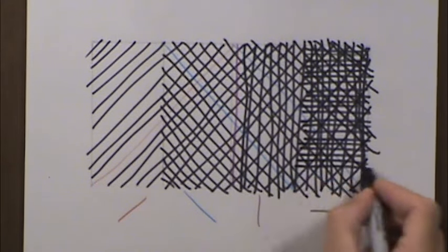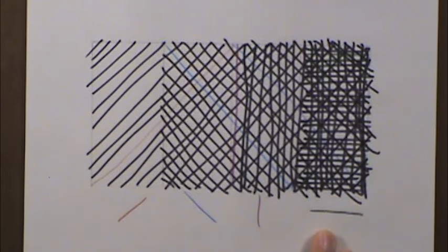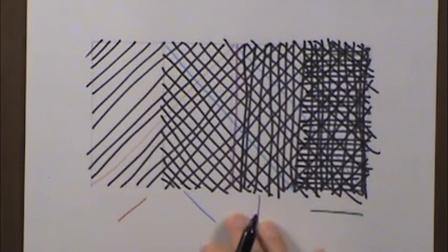If you wanted a smoother transition, you would involve more zones and more angles, and then the transition would be even smoother. But that should get you started in practicing basic cross hatching techniques.